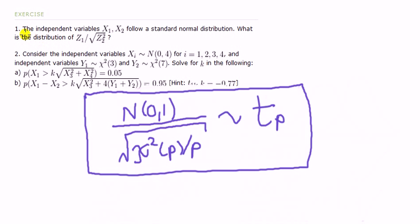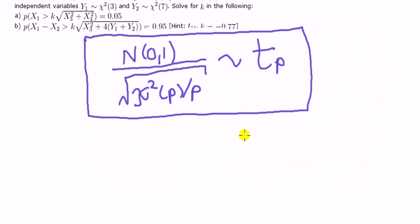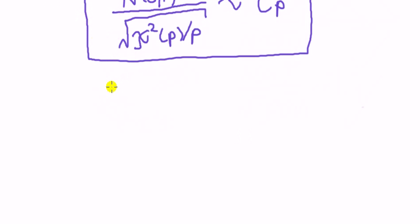Okay, let's apply it to this first one. Independent variables x1, x2 follow a standard normal distribution. What is the distribution of, and this should read, x1 over square root of x2 squared? Now, whenever, this is, we've just got to look for patterns here, and memorize these patterns.